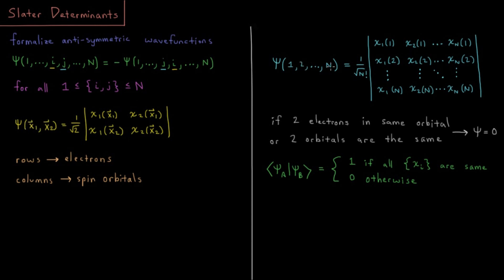We like just writing out 1, 2, n, indicating from the context that we mean all the coordinates of electron 1, all of the coordinates of electron 2, etc.